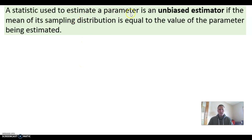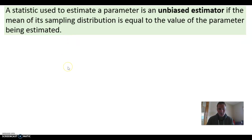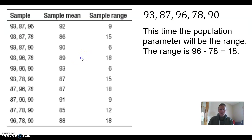A statistic used to estimate a parameter should be an unbiased estimator, meaning the mean of its sampling distribution equals the parameter. I took all possible sample means of size 2 — there were 10 — took the mean of all those means, and it was 4.4. Adding up all 5 values in the population also gave a mean of 4.4.